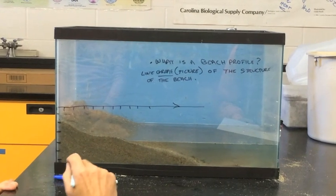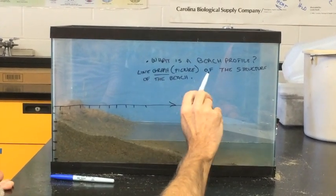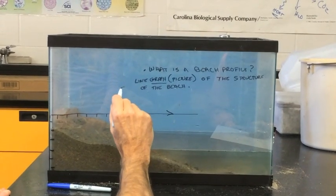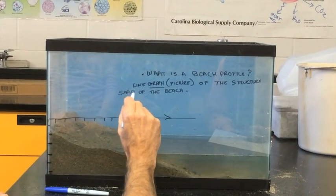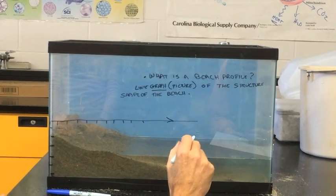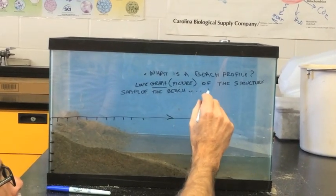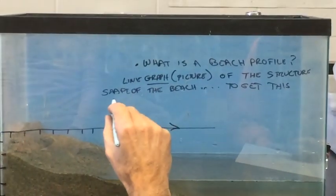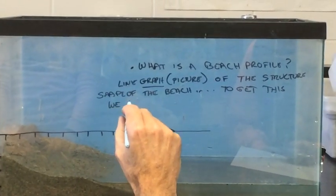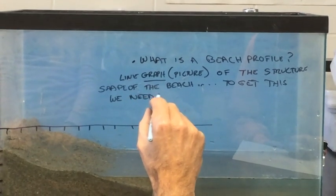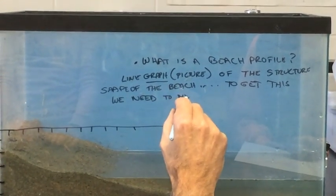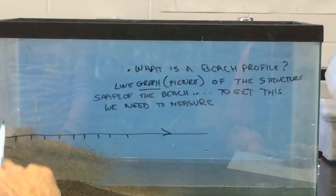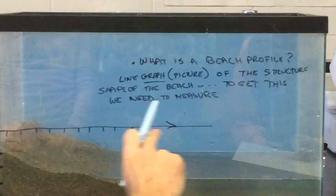To summarize this, we've got a line graph which is a picture of the structure or shape of the beach. And to get that, to get this,